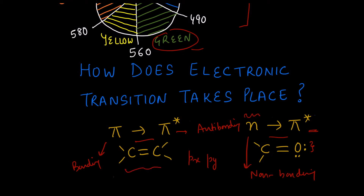The C=C alkene group results in pi to pi star transition. Because there is no lone pair, you cannot observe n to pi star transition. On the other hand, for compounds containing carbonyl groups, you do observe n to pi star transitions. The alkene group C=C or the carbonyl group C=O are called chromophores, because the presence of these groups is responsible for the colour of many substances.